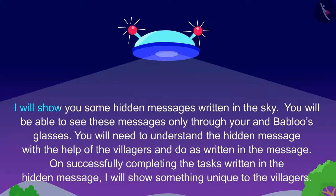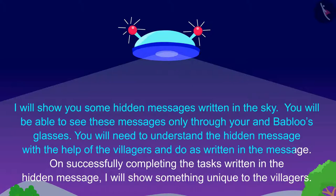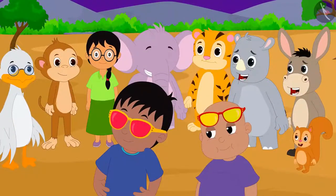Raju saw this written in the sky: 'I will show you some hidden messages written in the sky. You will be able to see these messages only through your and Bablu's glasses. You will need to understand the hidden message with the help of the villagers and do as written in the message. On successfully completing the task, I will show something unique to the villagers.' Raju read out this message to all the villagers.